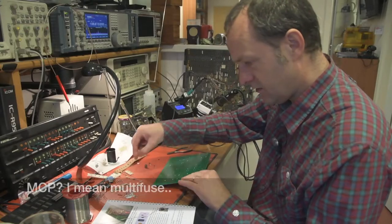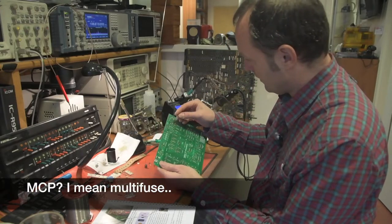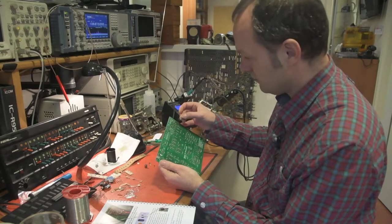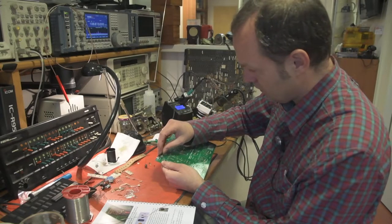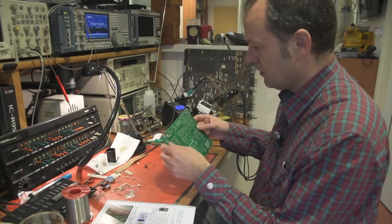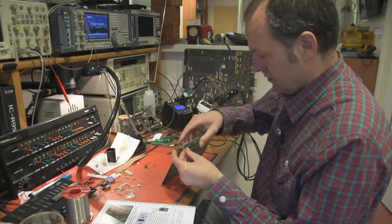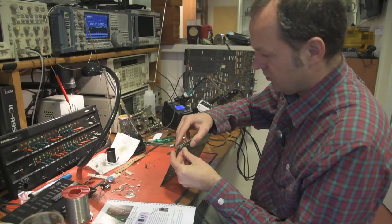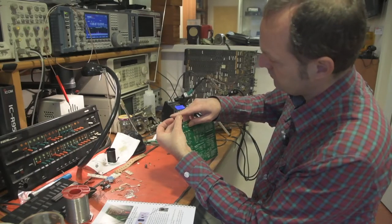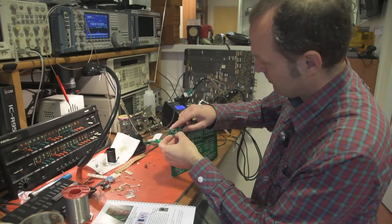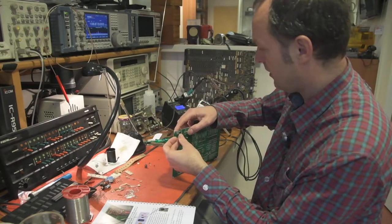So we have the MCP, which goes, where does it go? Over here, multifuse. So the multifuse has a bend in the pins, which keeps it from going all the way in. That's perfectly fine.